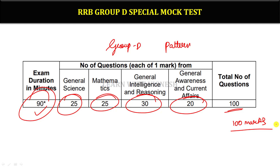The mock test exactly follows the Group D level. In the mock test series of 100 questions, around 65 to 70 questions are manageable. About 20 questions are at intermediate level, and 10 to 15 questions are challenging.